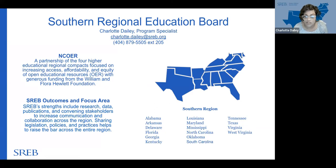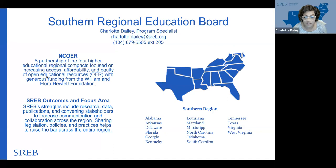SREB works in 16 southern states, from Alabama to West Virginia. Under this grant initiative, SREB's outcomes and focus areas are centered around research, data, publications, and convening of stakeholders. That's where our strengths lie — in research and data and publishing reports and policy briefs to our constituents.